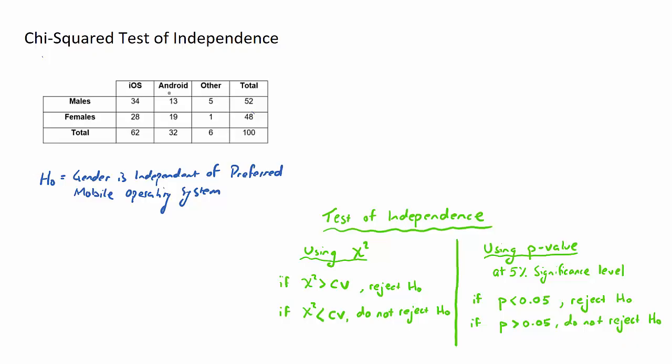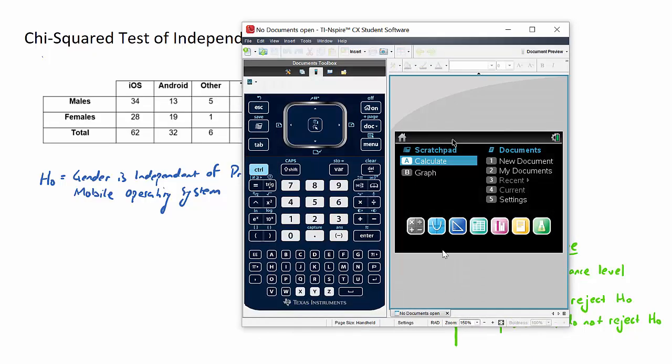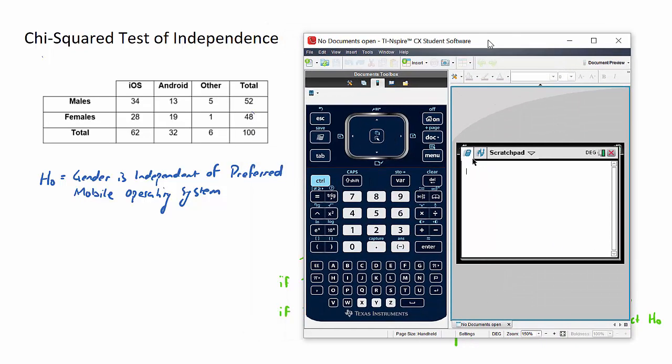Next step is to find two key values here. We're looking for the chi-squared value and we're looking for the p-value. We're going to use the graphics calculator for both of those in one go. So the process for that: we open our calculator up, we go to a blank scratchpad and we set up a matrix.